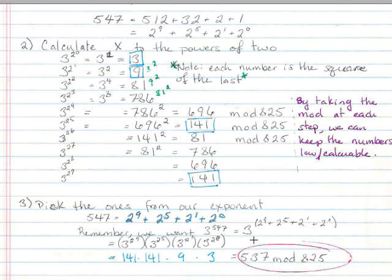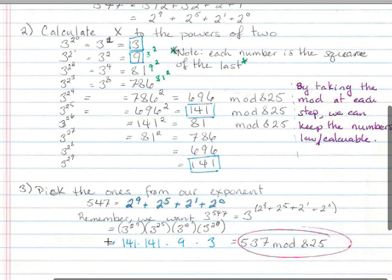And from exponent rules, we know that I can rewrite it as this, 3 to the 2 to the 9 times 3 to the 2 to the 5, 3 to the 2 to the 1, 3 to the 2 to the 0. And then up here, in my little blue boxes, we have what each of these numbers equals mod 825.